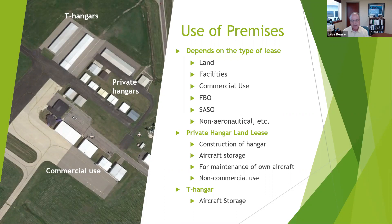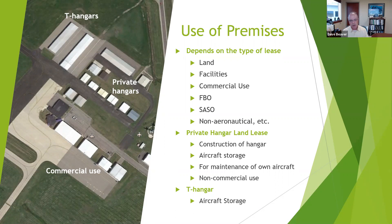For uses of premises, that depends on whether it's land, existing facilities and hangars, or commercial use. For private hangar land leases, if you're leasing a parcel to build a hangar, you'd want to include construction of the hangar — you don't want to lease a piece of ground for a 20 or 30-year term and have the hangar not get built for 10 years. You want to specify that it is for aviation and aeronautical purposes, aircraft storage, and maintenance on your own aircraft — typically non-commercial use. For a T-hangar, you'd look at primarily aircraft storage.